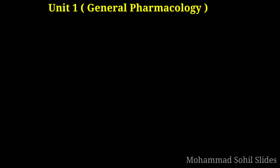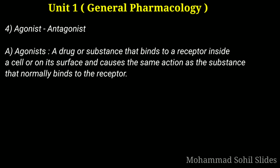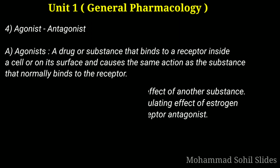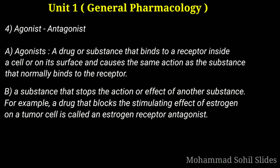Now coming to the last topic, that is agonist and antagonist. An agonist is a drug or substance that binds to a receptor inside a cell or on its surface and causes the same action as the substance that normally binds to the receptor. An antagonist is a substance that stops the action or effect of another substance — for example, a drug that blocks the stimulating effect of estrogen on a tumor cell is called an estrogen receptor antagonist.